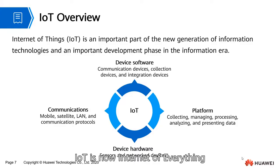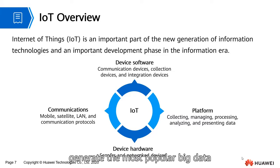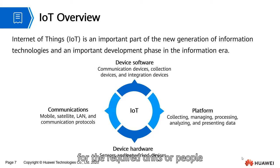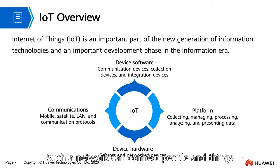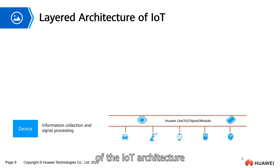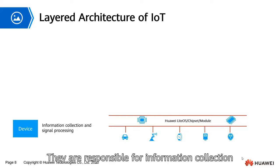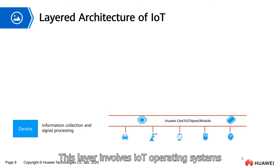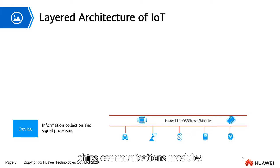IoT is now the Internet of Everything. It uses different detectors to generate big data and divides the data into multiple parts for required units or people, connecting people and things and making our life smart and intelligent. Devices lie in the bottom layer of the IoT architecture, responsible for information collection and signal processing. This layer involves IoT operating systems, chips, communications modules, and various sensors.